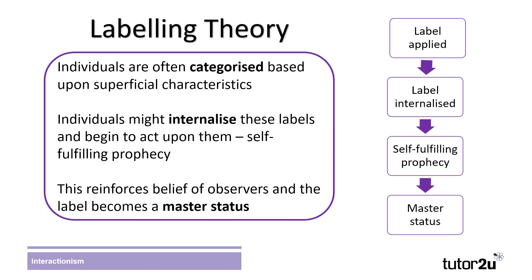For example, being labelled as lazy may lead pupils to give up trying or be less motivated. This is what is referred to as a self-fulfilling prophecy — when a prediction about a person's behaviour comes true. As people observe the pupil living up to their label, this reinforces the original labelling and becomes a master status: a status that overrides all of the characteristics that the person possesses. In the case of our lazy pupil, this means that any effort they put in will often be seen as minimal.